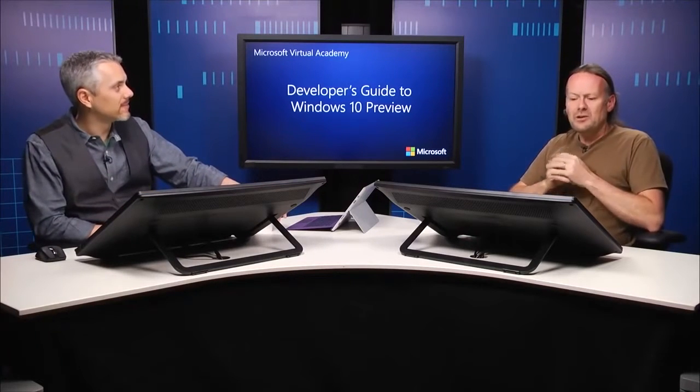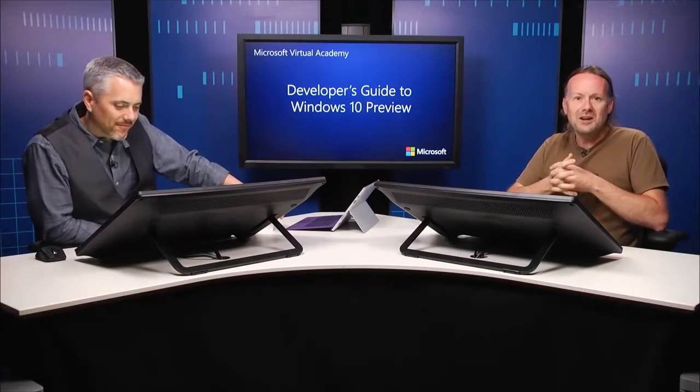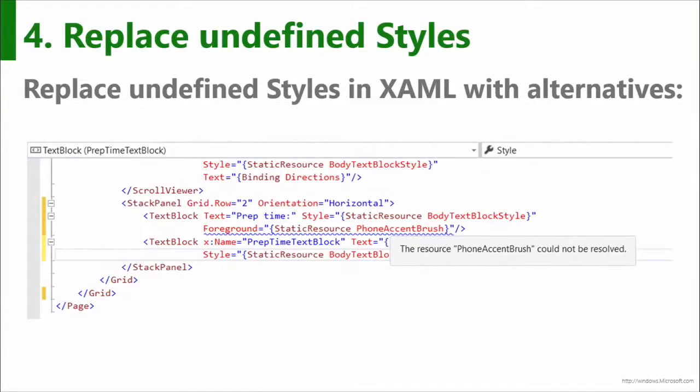We also know there are going to be some changes on the styles inside XAML — some subtle changes. You'll see problems like phone accent brush, particularly if you created an app using the Windows Phone templates. There are also a few list view item styles it won't understand because they were specific to phone on 8.1. So you just need to go through and replace all of them with the standard common ones, or create your own styles.